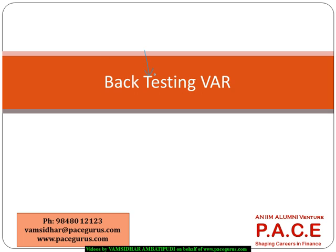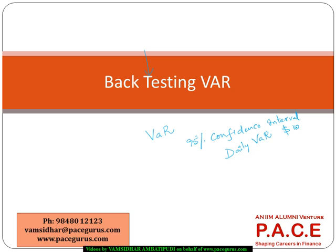We have used various mechanisms to compute the Value at Risk. Whatever may be the mechanism or model that has been used, let's say we have arrived at a 95% confidence interval where the daily VAR is computed at 10,000 dollars.